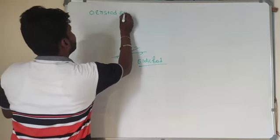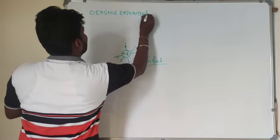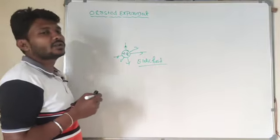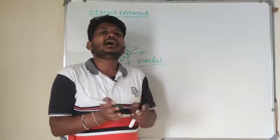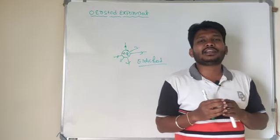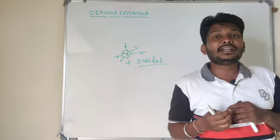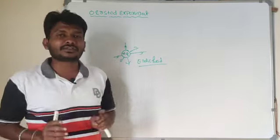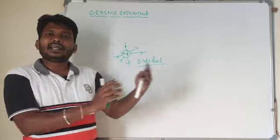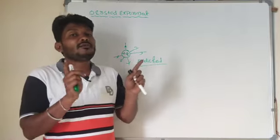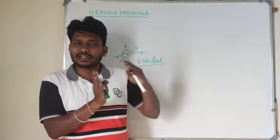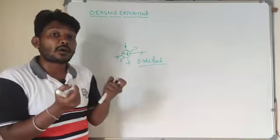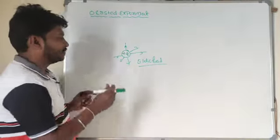In the Oersted experiment, Oersted — the scientist — studied the properties of charges when they are in motion. In current electricity, we know that when charge is under motion, current is produced. That is electric current. Along with that electric current, one more property is introduced in the Oersted experiment.